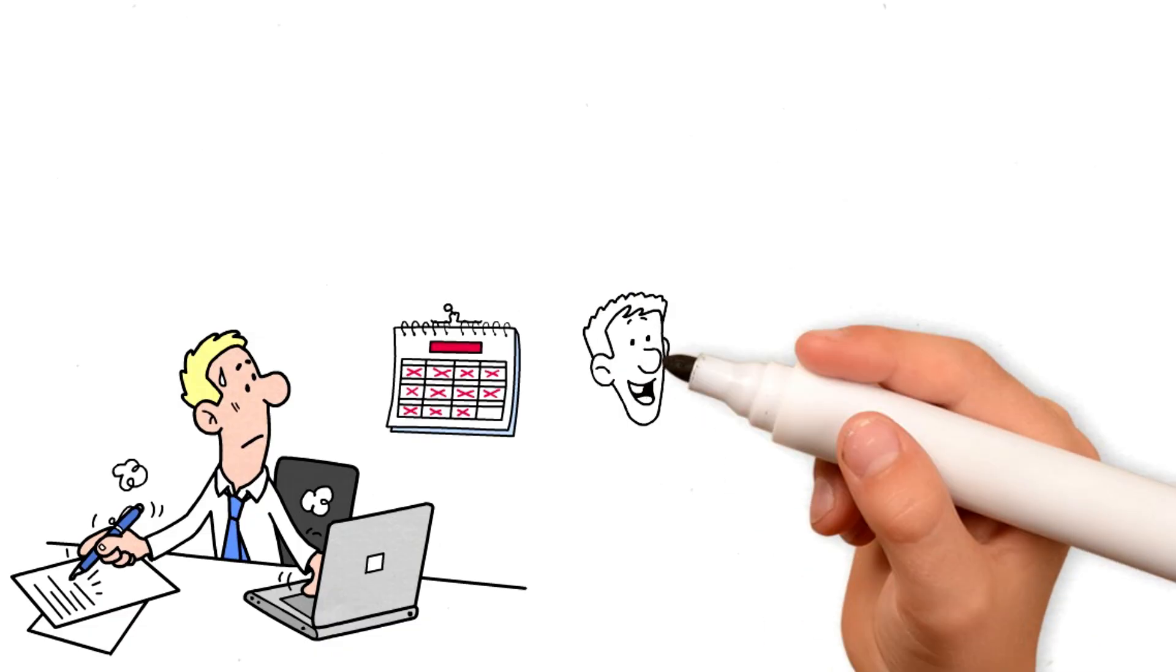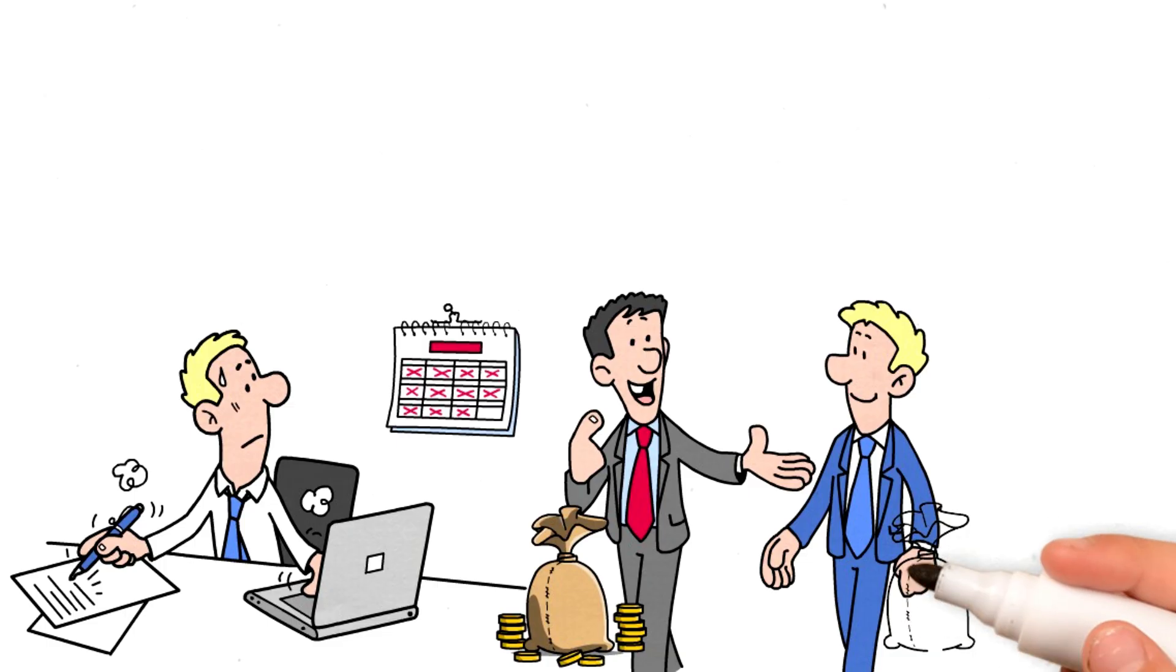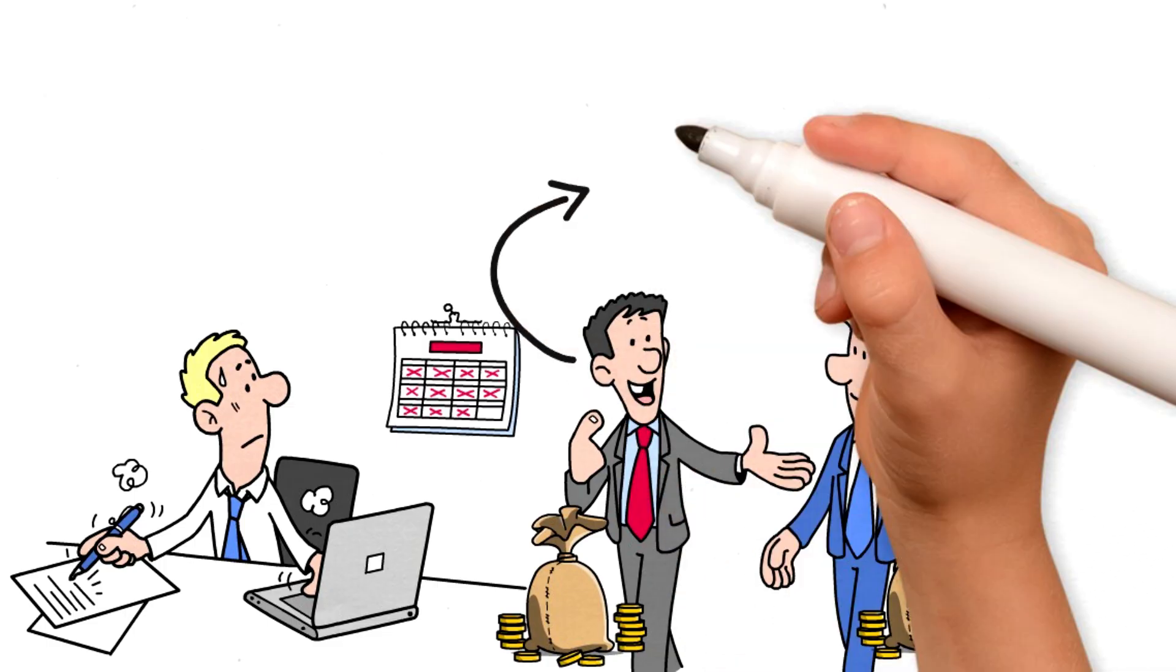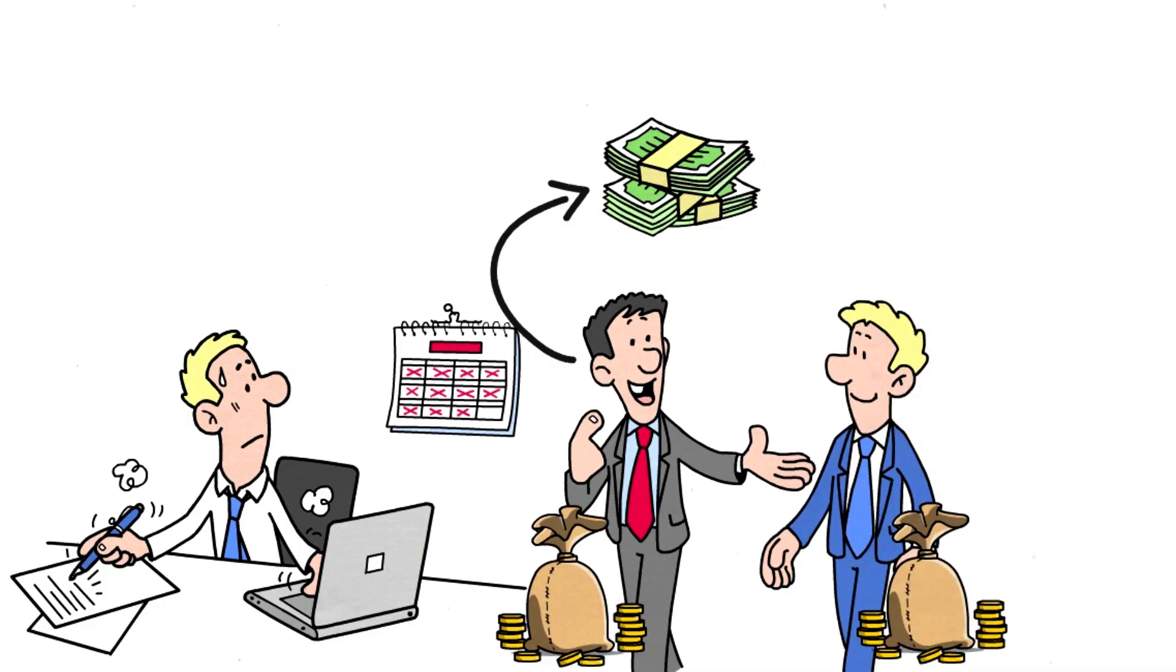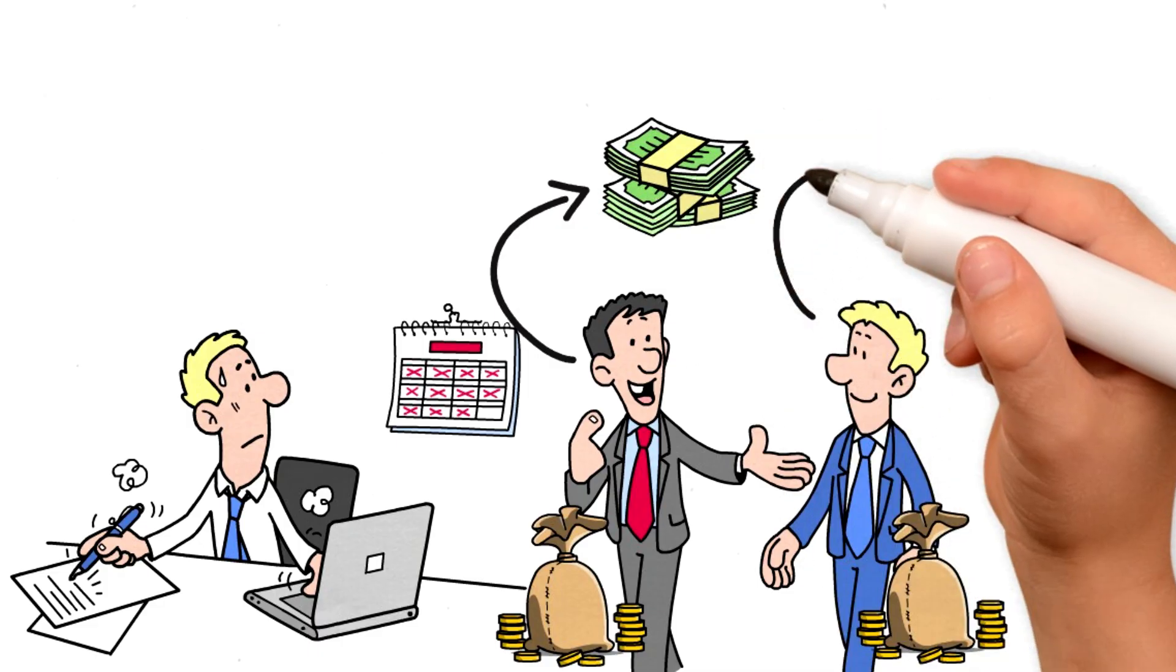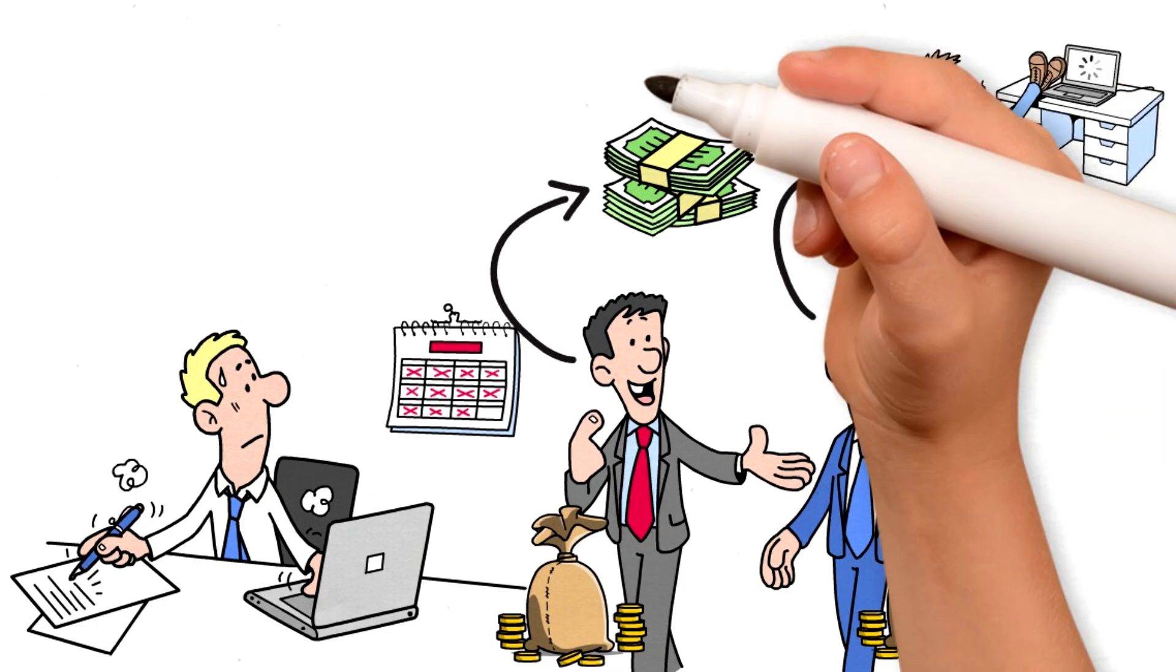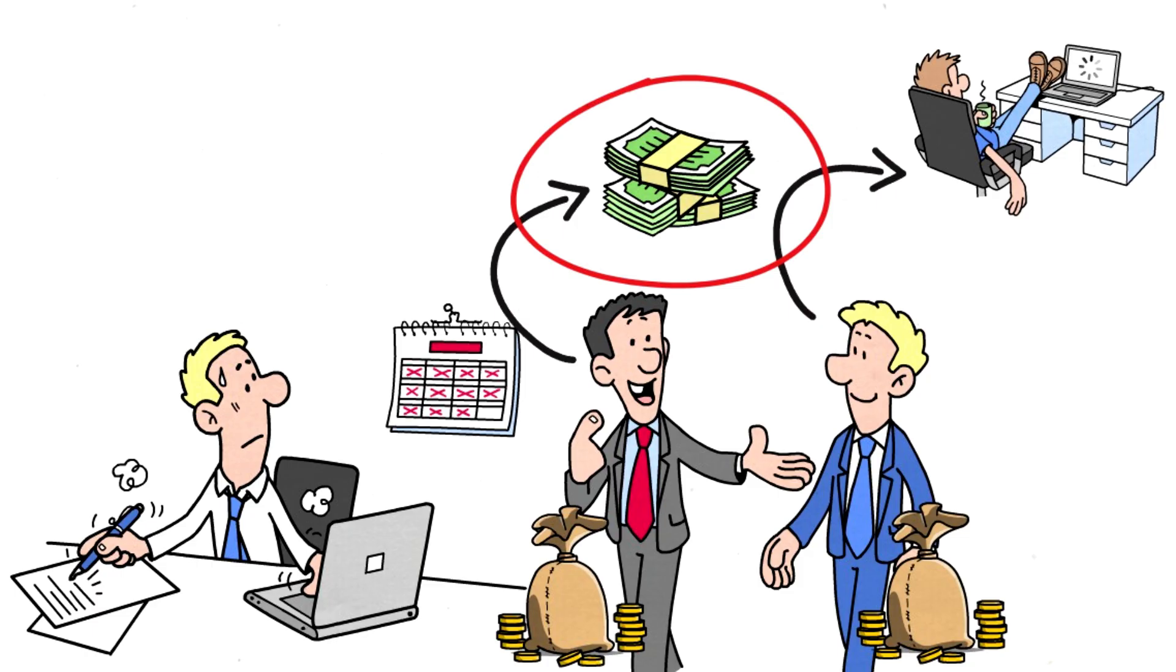Two people can invest exactly the same amount of money and end up with completely different results for only one reason, who started earlier. Imagine two people with normal lives, normal salaries, and normal decisions. One starts investing young, even with little money, and the other decides to wait because they believe they will earn more later. The first invests for a few years and then simply lets the money keep growing. The second invests for decades, much longer, and with the same monthly effort.